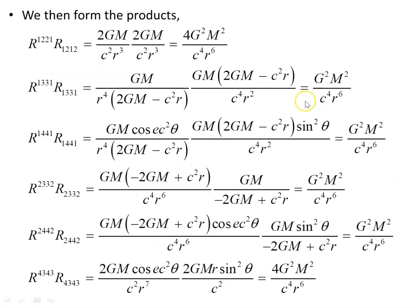We then form the products R^αβγδ R_αβγδ for each of the original six base cases, bearing in mind each generates four components. The products are computed by multiplying the fully-raised Riemann component by the fully-lowered one for each case. For all six cases these products turn out to be positive. Since each base term generates four non-zero versions, and they all turn out positive in this case, we account for their multiplicity in the final sum.